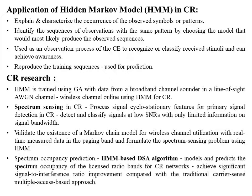Next, we will look into the application of hidden Markov models in cognitive radio. A hidden Markov model can be built for a specific system to explain and characterize the occurrence of observed symbols or patterns. This model can then be used to identify sequences of observations with the same pattern by choosing the model that would most likely produce the observed sequences. Therefore, hidden Markov models can be used as an observation process of the cognitive engine to recognize or classify received stimuli and achieve awareness. Since they can reproduce training sequences, they can also be used for prediction. Furthermore, learning can be accomplished by creating new models.